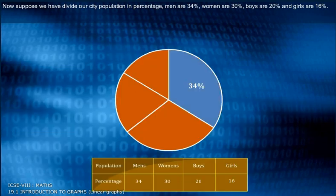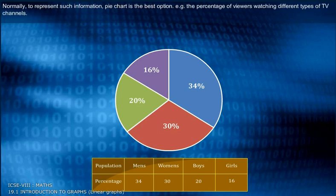Men are 34%, women are 30%, boys are 20% and girls are 16%. Normally, to represent such information, pie chart is the best option. For example, the percentage of viewers watching different types of TV channels.